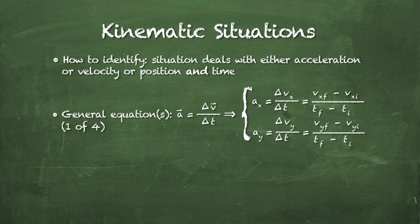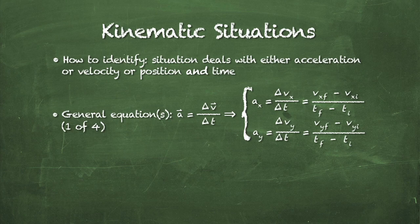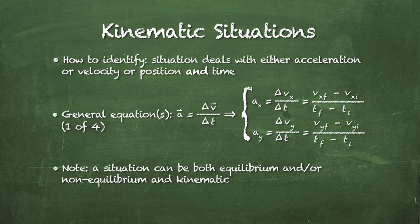The acceleration in the x-direction equals the change in the x-component of velocity divided by the change in time, or: ax equals (vx_final minus vx_initial) divided by (t_final minus t_initial). We have the same equation for y. Remember that a situation can be kinematic, non-equilibrium, and equilibrium all at the same time, giving you three different starting equations to solve for three unknowns.